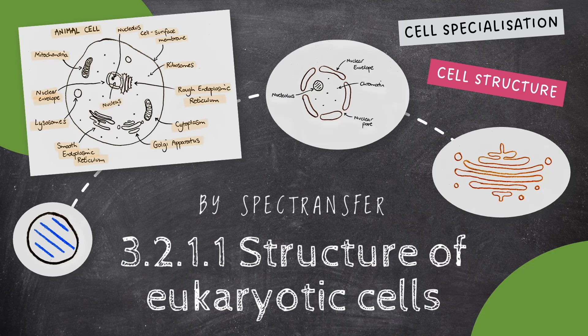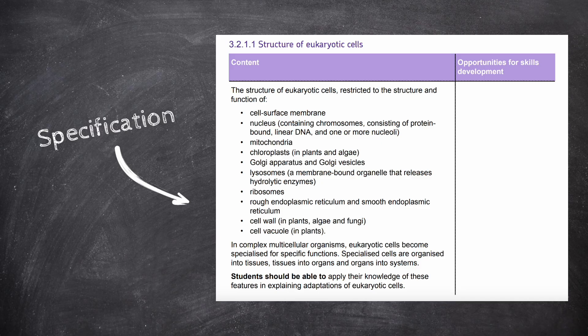Hey guys, welcome to SPECTransfer and to topic 3.2.1.1, the structure of eukaryotic cells from the AQA A-level biology specification. As always, let's start with a look at our specification.